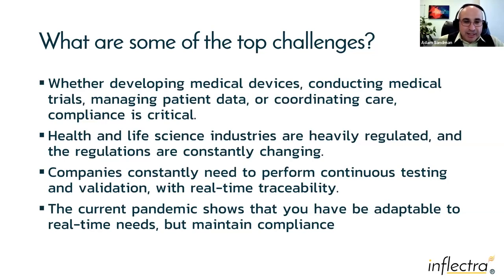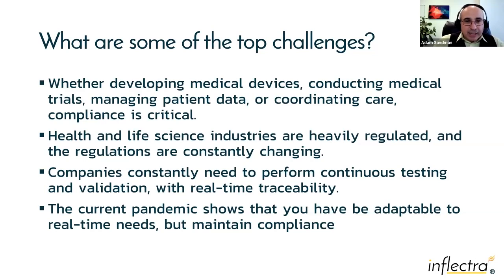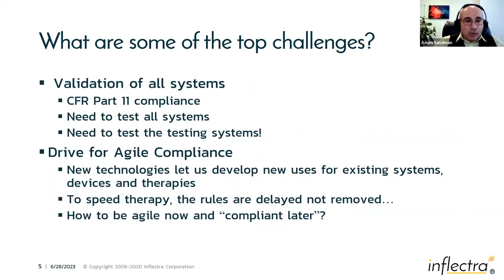With this move to a CSA model, we're shifting from a point-in-time model — where you build something, test it, and that's it — to continuous testing. Systems are moving toward a continuous deployment model, releasing software in updates, and hardware systems are also impacted. How do you do continuous testing and have real-time traceability when things are no longer static? And as we saw in the pandemic, you have to be adaptable to real-time needs. Even with waivers for innovative solutions rushed to market, when the dust settles, compliance must still be maintained.